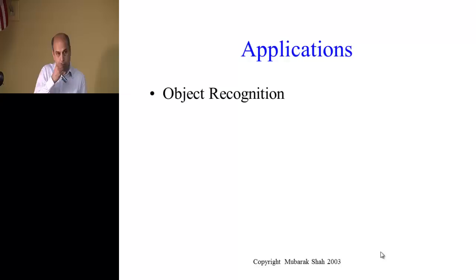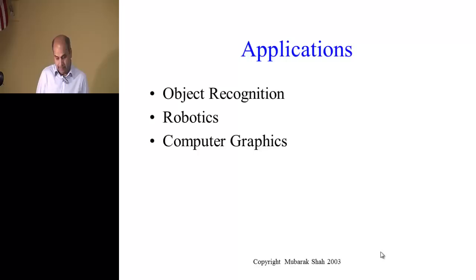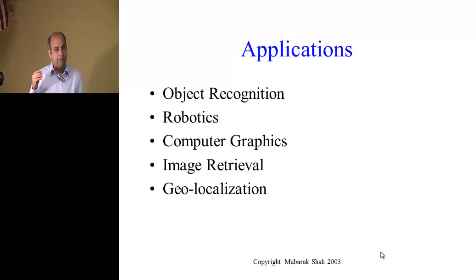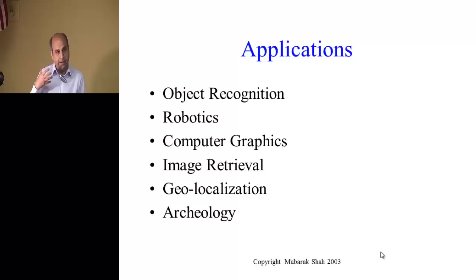The applications are many. If you can do 3D recovery, you can do object recognition — recognize objects in 3D. You can do robotics: put a camera on the robot, the robot can move around, navigate, follow a path. You can do computer graphics — generate realistic videos or imagery with new viewpoints. You can do image retrieval, and geolocalization — find out the exact location where a picture was taken.